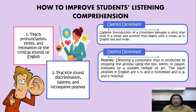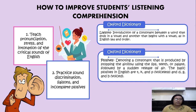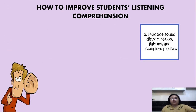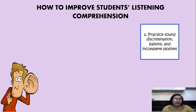Next is incomplete plosives. Plosives are consonants produced by stopping the airflow using the lips, teeth, or palate, followed by a sudden release of air. The basic plosives in English are T, K, and P — also known as voiceless plosives — and D, G, and B — also known as voiced plosives. An incomplete plosive is when a plosive sound is immediately followed by another plosive sound. Plosives can be distinguished into voiceless and voiced plosives, and incomplete plosives involve two plosives in a specific word.